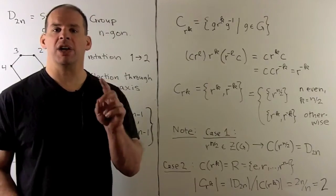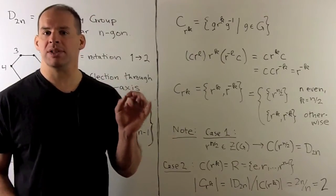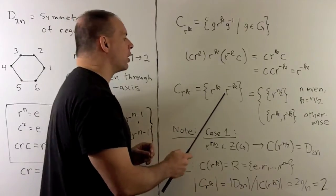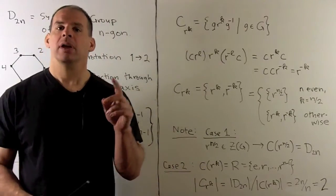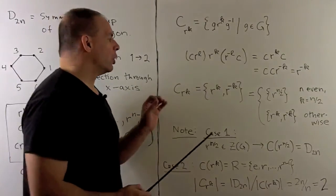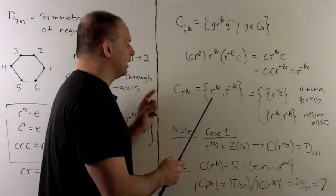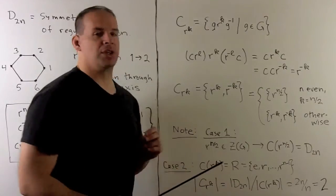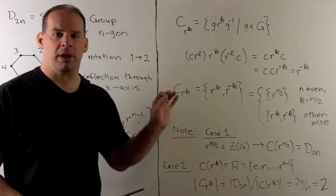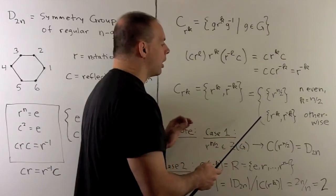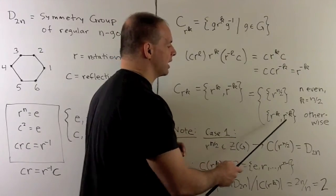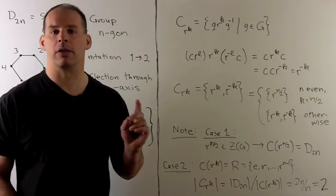For a rotation, we have at most two elements in the class: r to the k and r to the minus k. As usual, things break into cases. If we have n even, and k equal to n over 2, then we have only one element in the class, r to the n over 2. Otherwise, we're going to have two distinct elements, r to the k and r to the minus k.